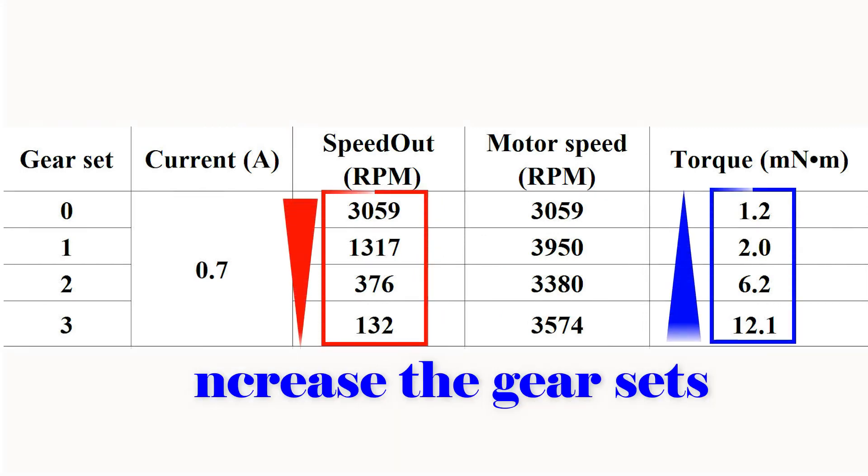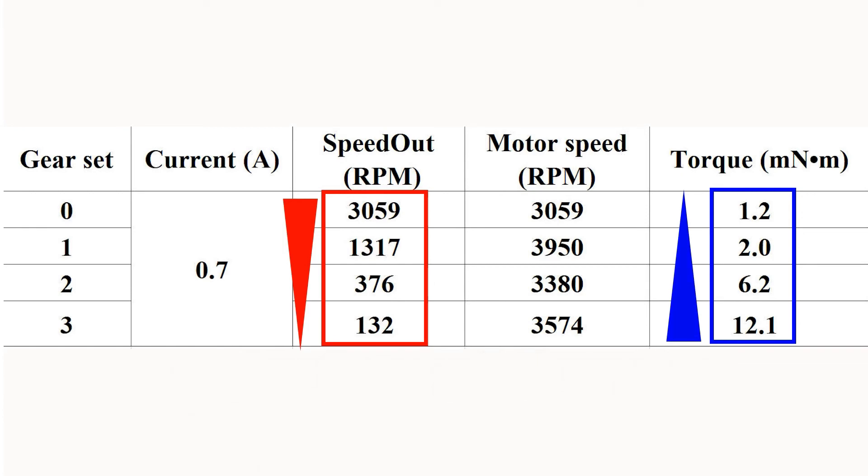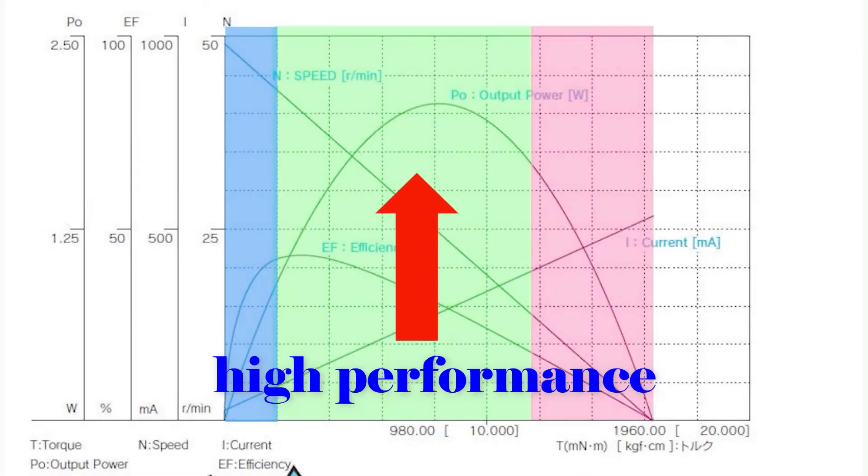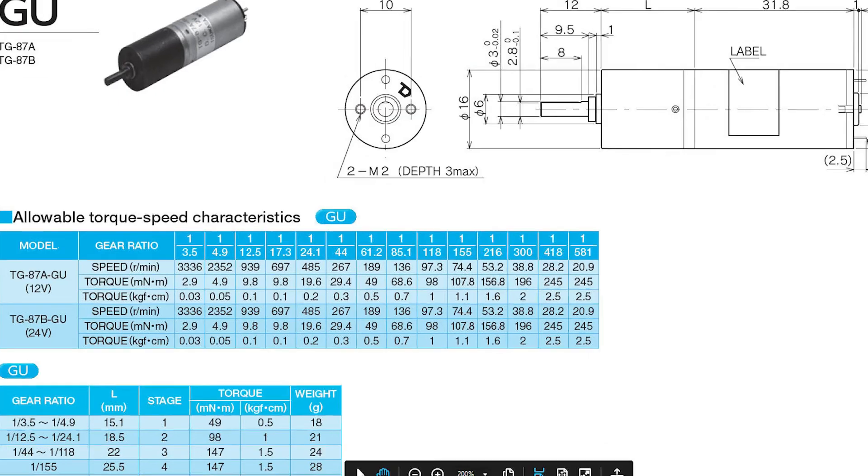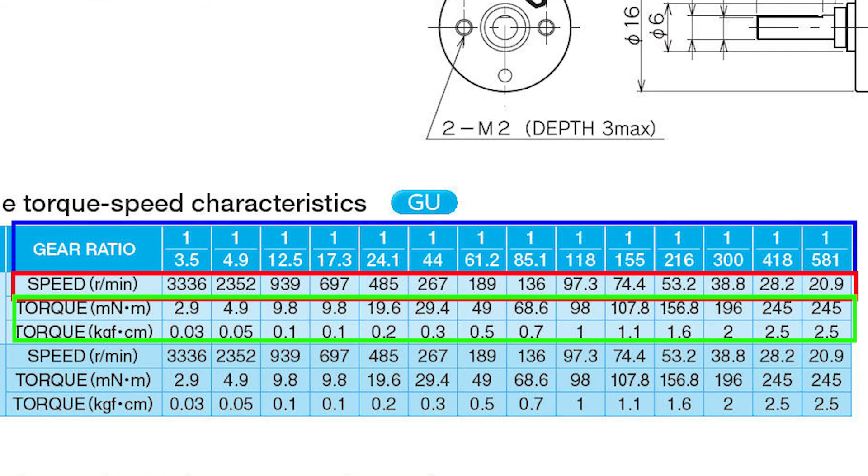With the increase in the gear set, the output speed decreases and the torque increases. So the real meaning of these words is revealed now. Keep the motor working in high performance condition. Increase the gear ratio which decreases the output speed, hence increase the output torque. This is the selection rule to find a good motor and gearbox combination.